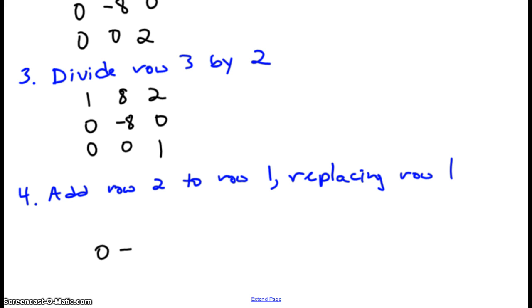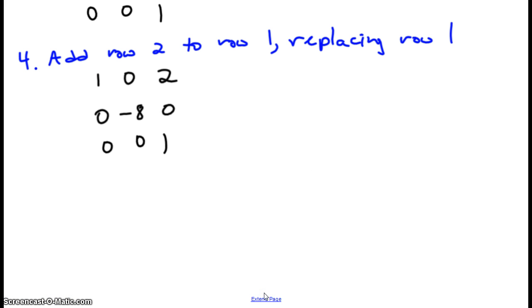And that's going to give us, well, our 0 negative 8 0 and our 0 0 1 stay the same. Our top row, well, the 8 plus the negative 8 gives us a 0 in the second column, so we're going to have 1 0 2. So we're making progress. Sorry, we need more room. Now I would go ahead and let's get row done. Number 5, I would divide row 2 by negative 8.